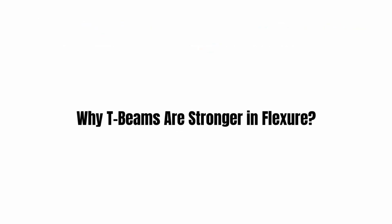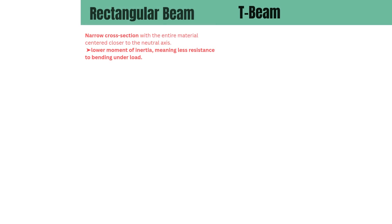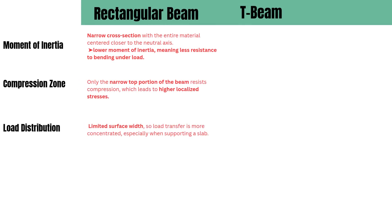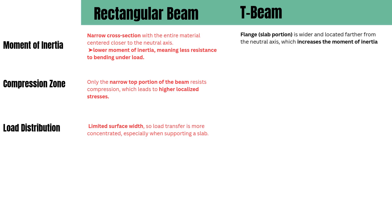Having understood this, let's discuss clearly why T-beams are stronger in flexure. Number 1: Increased moment of inertia. The flange in a T-beam is both wide and positioned far from the neutral axis. When calculating the moment of inertia (I) with this cross-section, it is found to be greater than that of rectangular beams. Moment of inertia is a key property that determines how well a beam resists bending — so higher the moment of inertia, better the flexural performance.